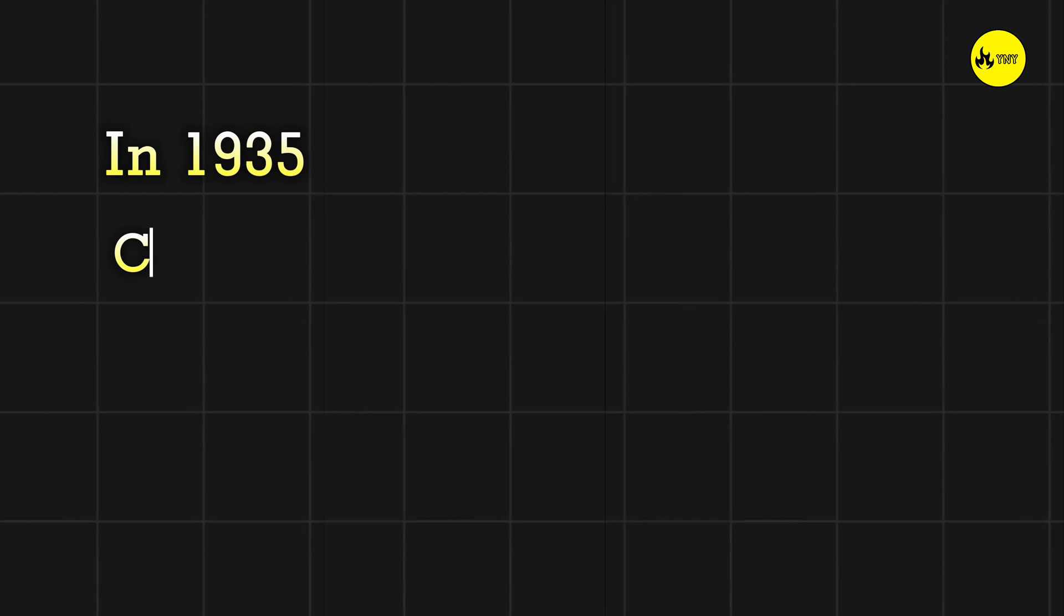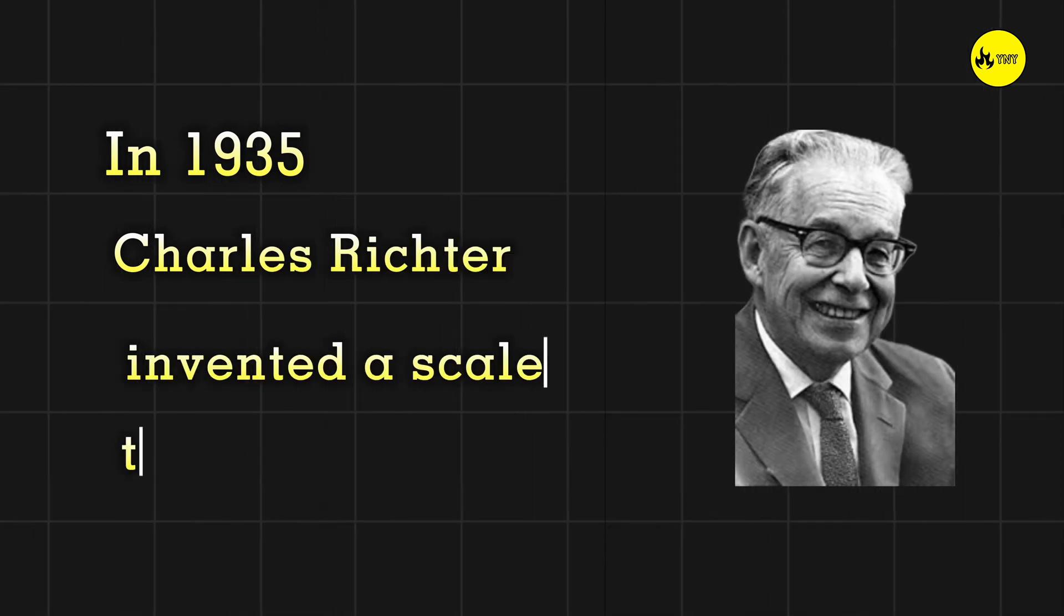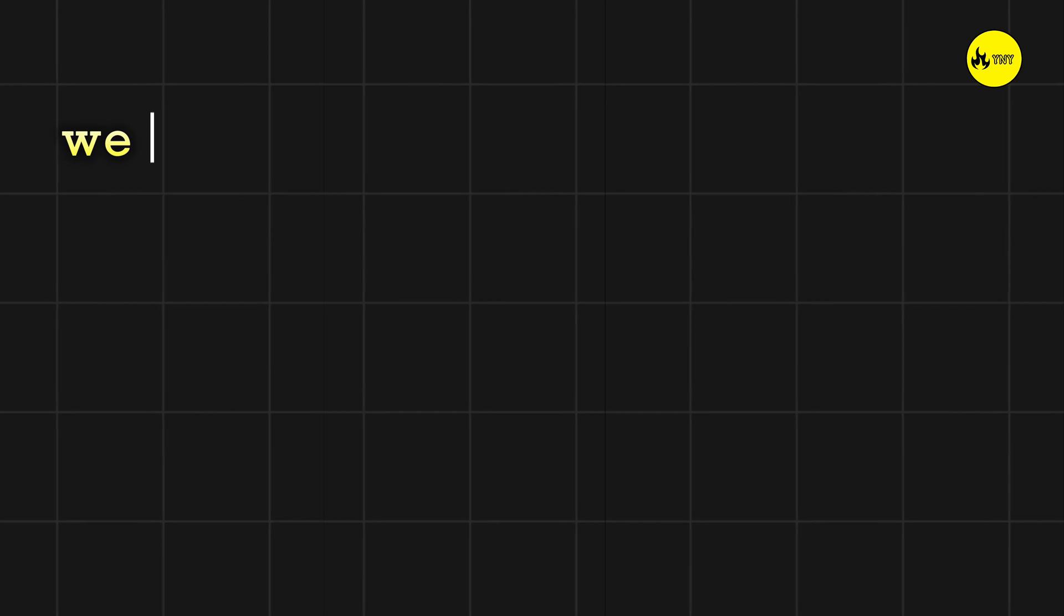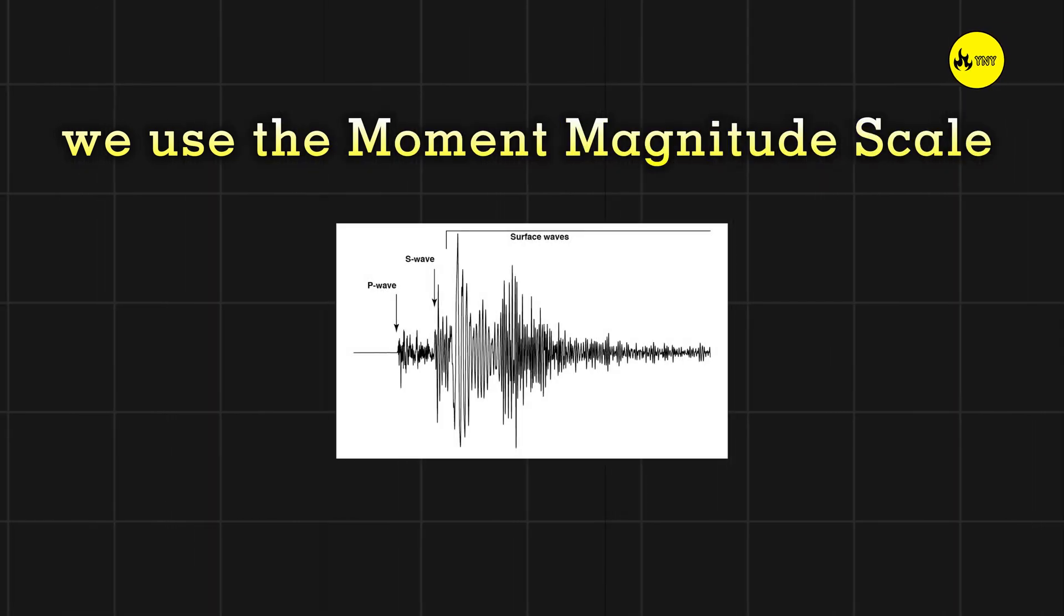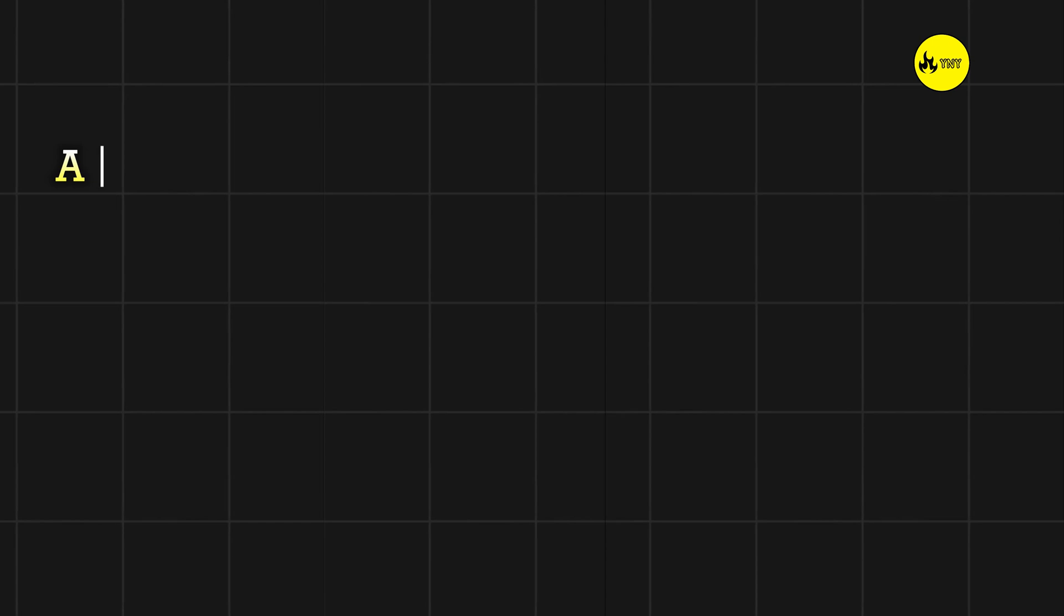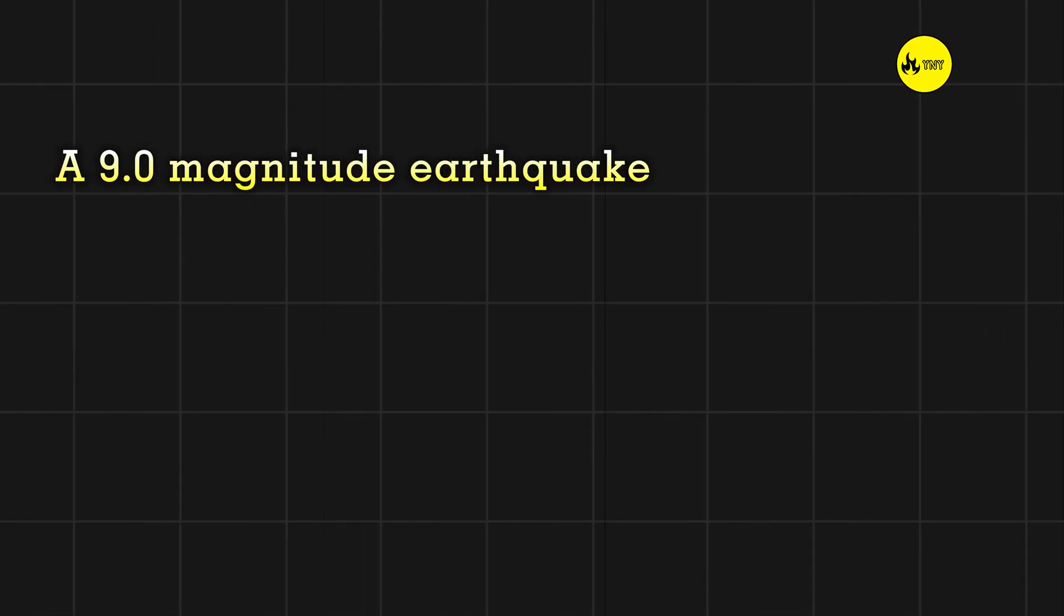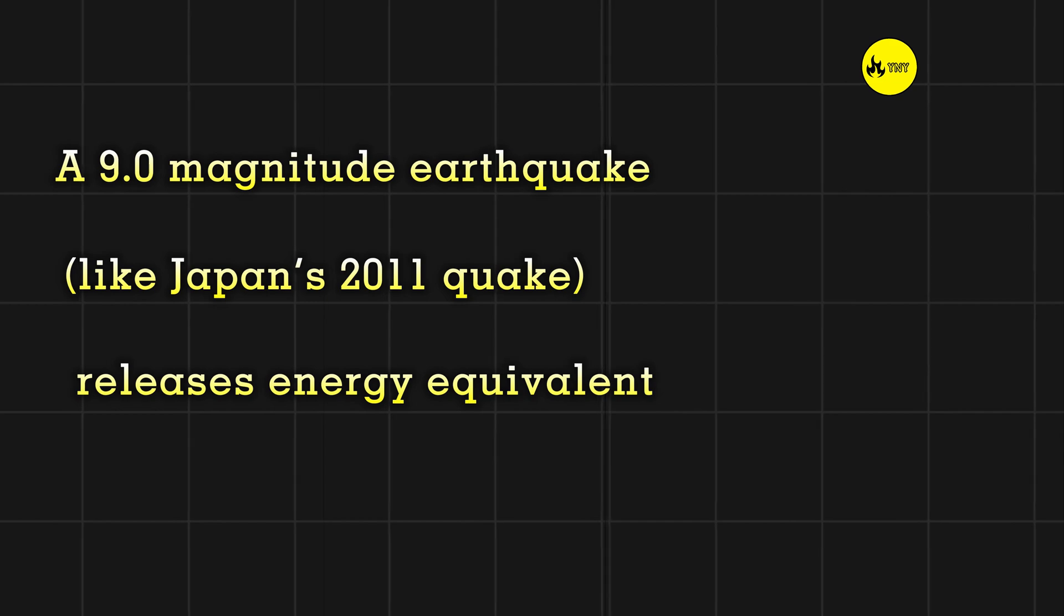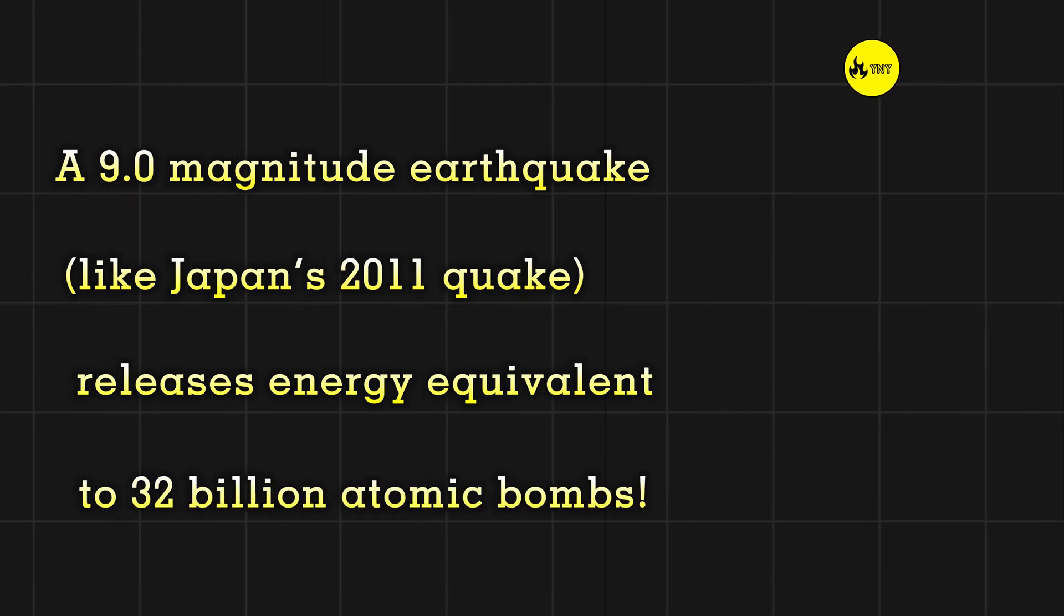In 1935, Charles Richter invented a scale that changed history. But science has evolved. Today, we use the Moment Magnitude Scale to measure an earthquake's true energy. Did you know? A 9.0 magnitude earthquake, like Japan's 2011 quake, releases energy equivalent to 32 billion atomic bombs.